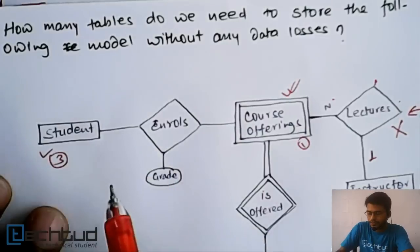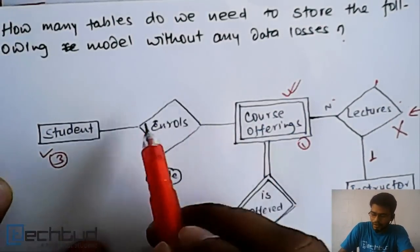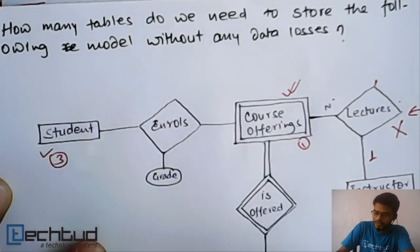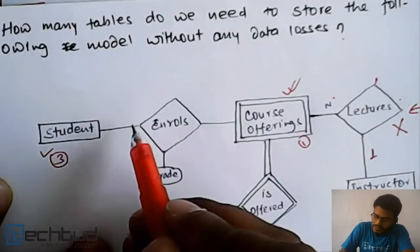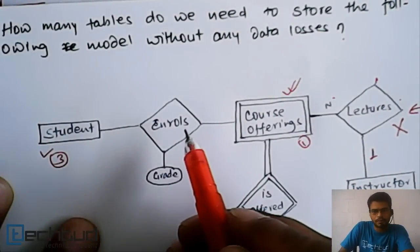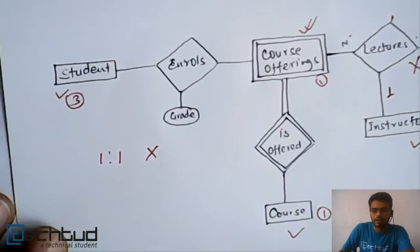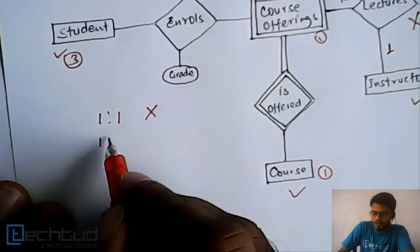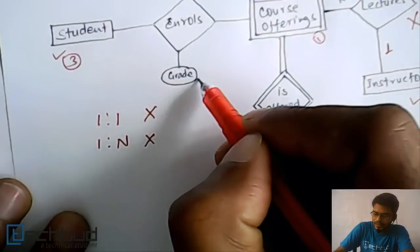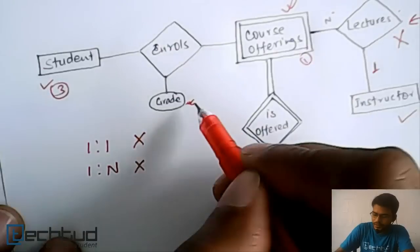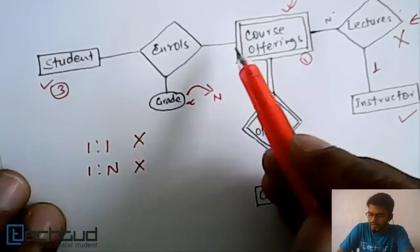Now let's consider the 'Enroll' relationship. If it is 1:1 or 1:N, we do not need a separate table. The grade attribute will move to the N side. For example, if students are taking multiple courses, this grade attribute will move to the course side.